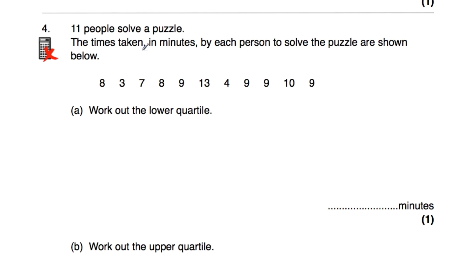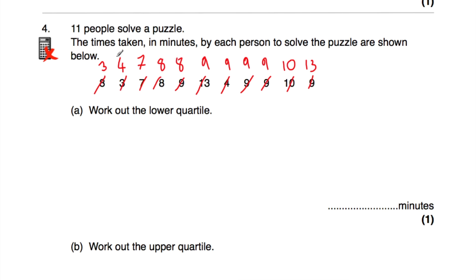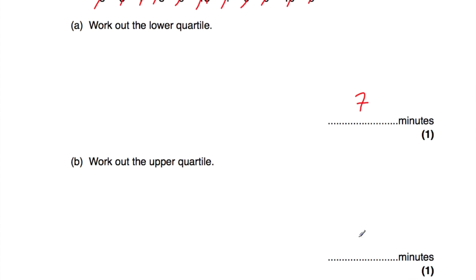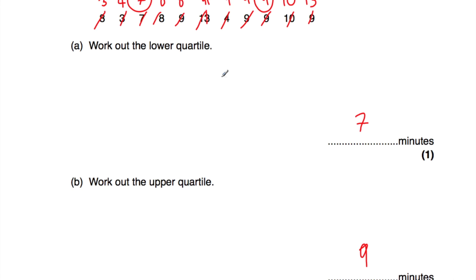Question number four: 11 people solve a puzzle and the times in minutes are shown below — they're jumbled up, so we need to put them in order. I've ordered all the times from quickest to slowest. Part A says work out the lower quartile: the median is identified, we look at the bottom half of the data, and the middle of those values is 7 — so the lower quartile is 7 minutes. Part B, the upper quartile, is 9 minutes.